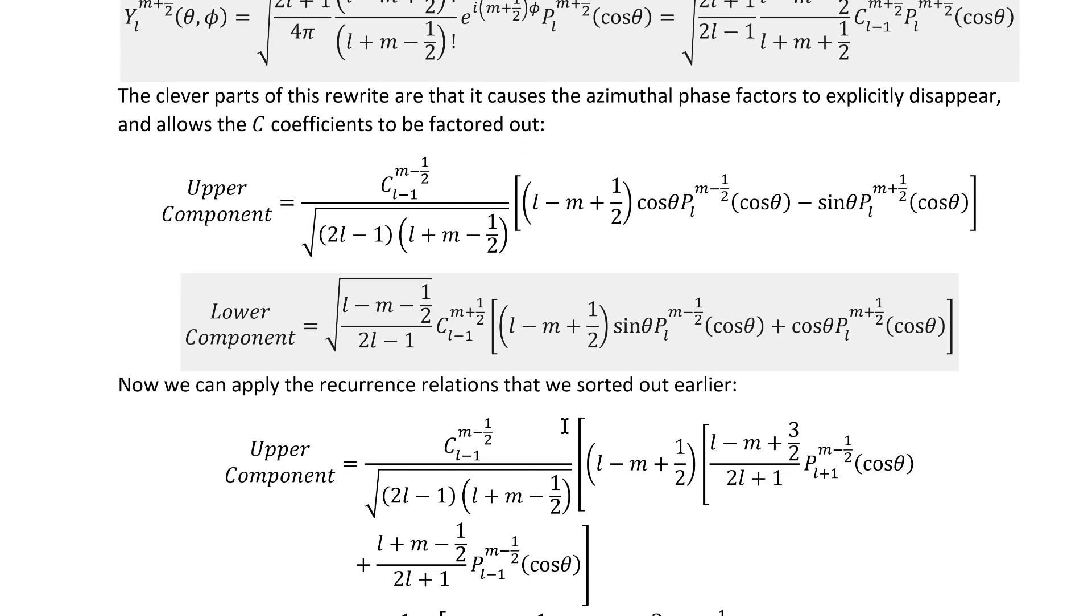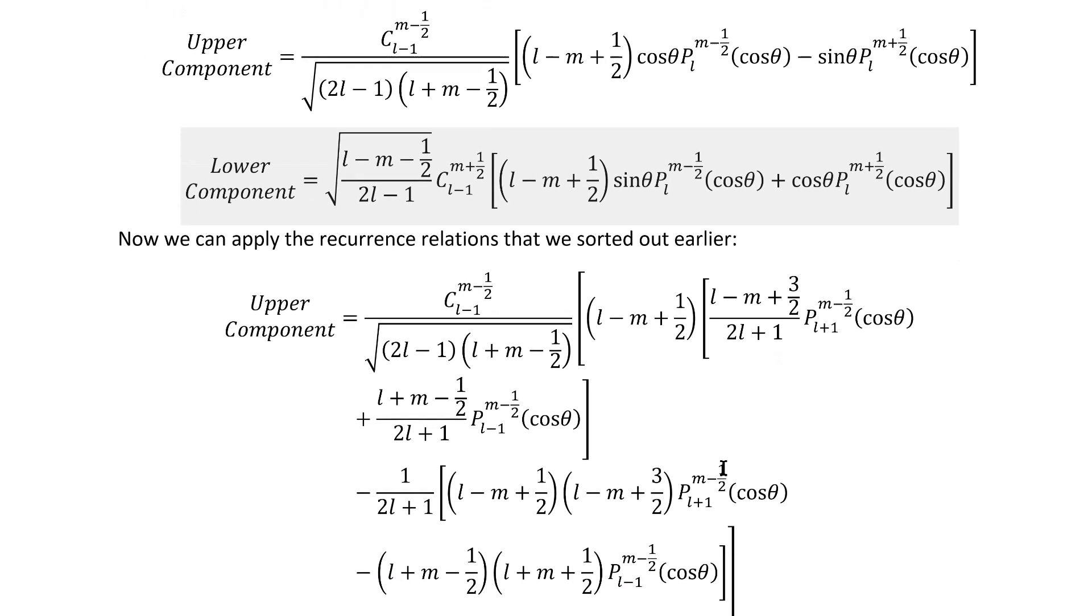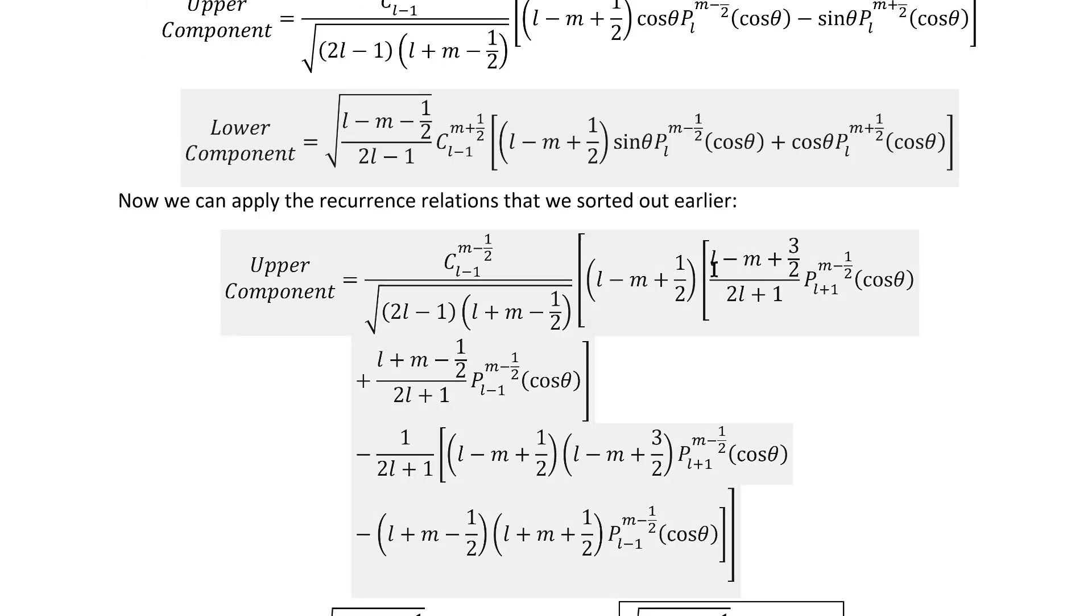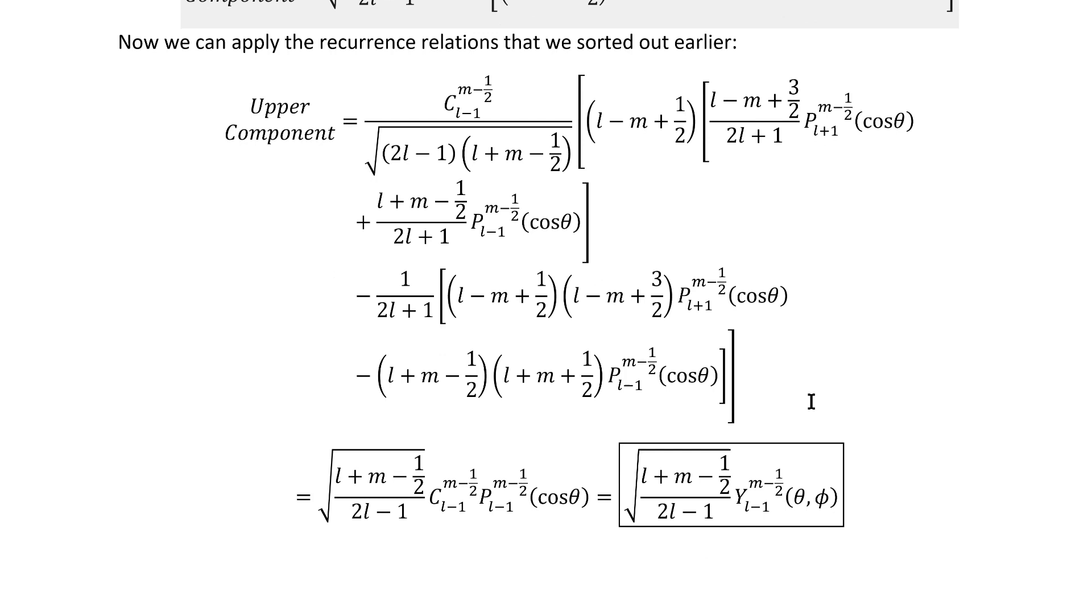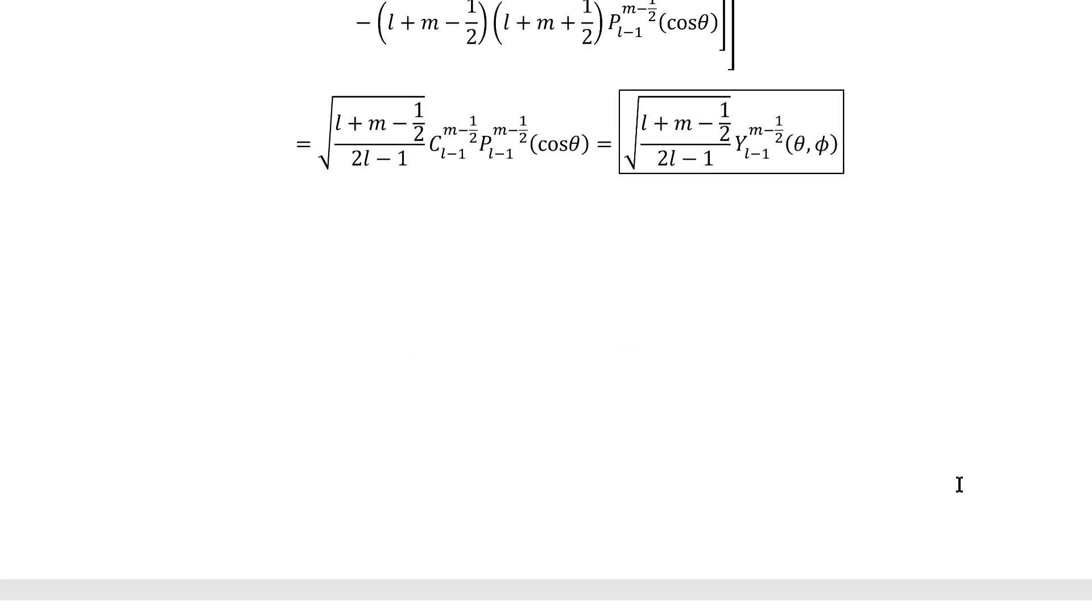And now we're ready to apply those recurrence relations that we sorted out earlier. Inserting the ones that we have for the upper component gives us this immediately, which looks horrible, but if you multiply things out and combine like terms, it actually simplifies down massively, and we get a really nice expression here that looks not exactly like what we're going for, but very similar. And we'll see how that ends up working out.